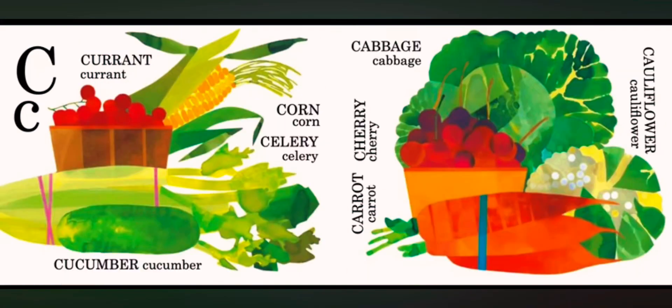C is for currant. C is for cucumber. C is for corn. C is for celery. C is for cabbage. C is for cherry. C is for carrot. C is for cauliflower.